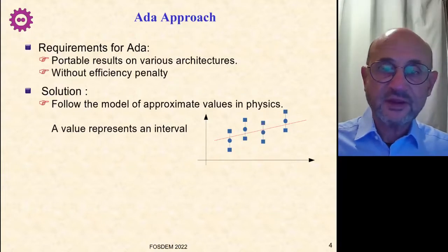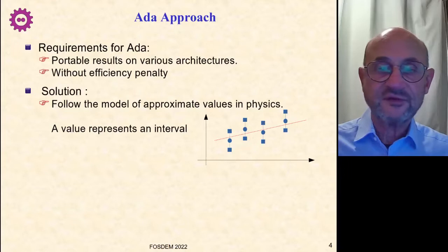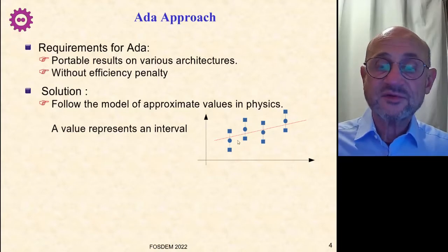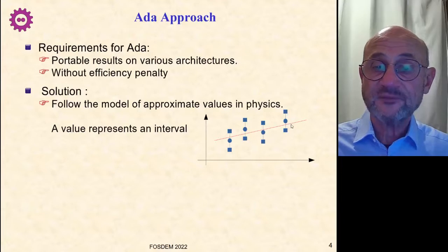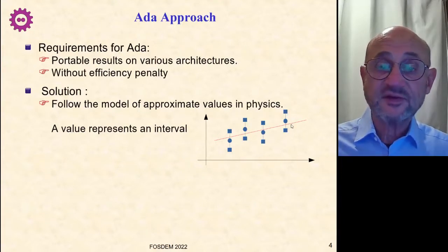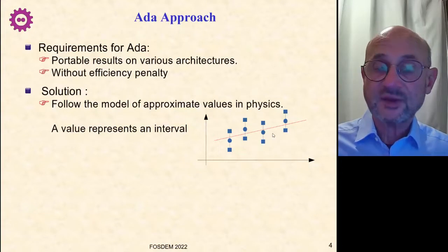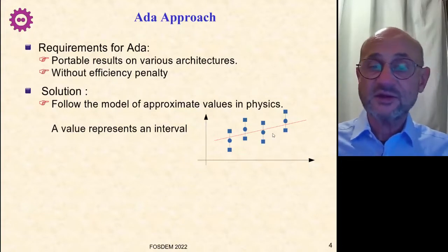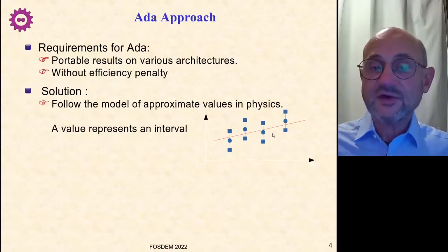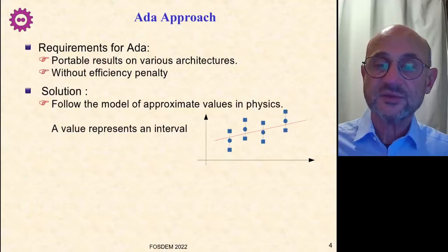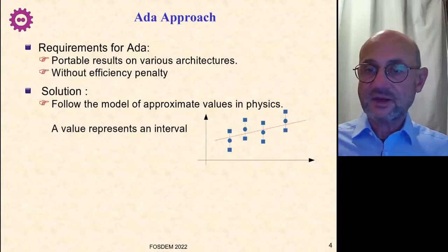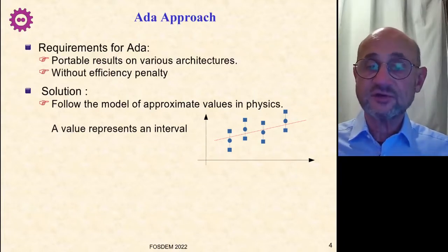The solution found by Ada was to follow the model of approximate values in physics. You know, when a physicist does an experiment, he doesn't consider just the measured point, the small circles here. Each measure has a certain uncertainty, and therefore the measurement is represented as a little segment. And if the physicist is lucky, he will find a straight line that goes through all segments, and then we can say that the phenomenon is linear. You will never find a straight line that goes through exactly through all the measured points, of course.